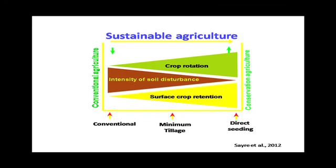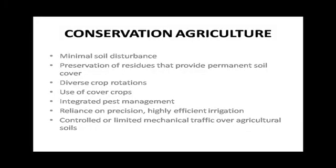As you move in these directions toward conservation agriculture, the presumption is that it's going to become more sustainable. In addition to those three principles, there are other sorts of practices that get bundled together in conservation ag systems, including integrated pest management, highly efficient automated irrigation systems — particularly in a region like California — and lastly, a fairly new concept: CTF, controlled traffic farming, where you're minimizing the mechanical disturbance that the soils are facing.